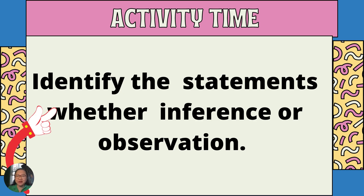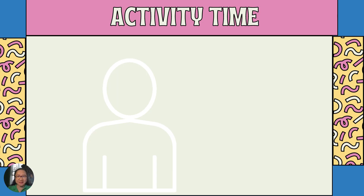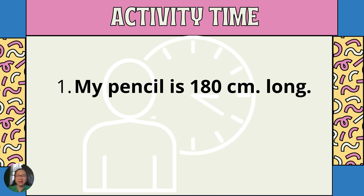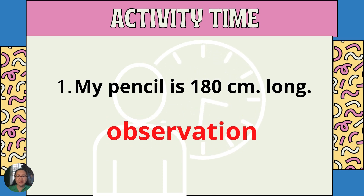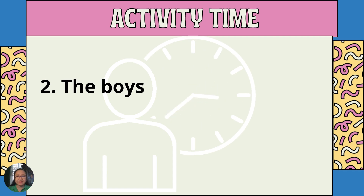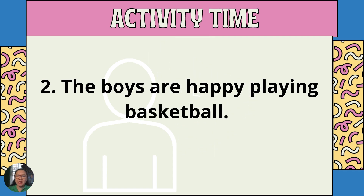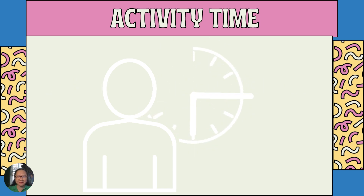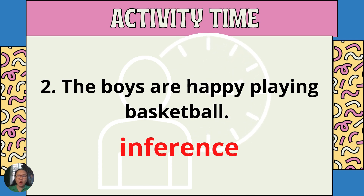Activity time! Identify the statements as either inference or observation. Number one: 'My pencil is 180 cm long.' The answer is observation, because you use your sense of sight to identify that the pencil measures 180 cm using an instrument known as a ruler. Number two: 'The boys are happy playing basketball.' The answer is inference — based on your experience, you know playing basketball is a happy activity, so since you observe the boys are playing basketball, you can say they are happy. Hence, this statement is inference.